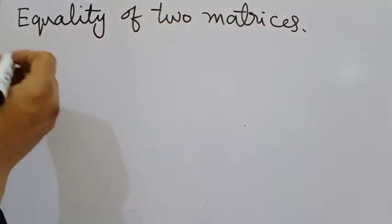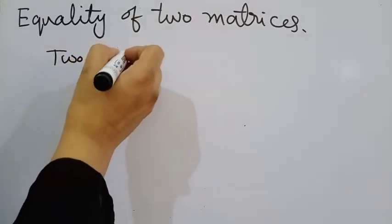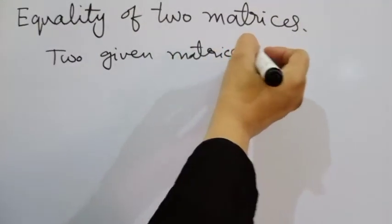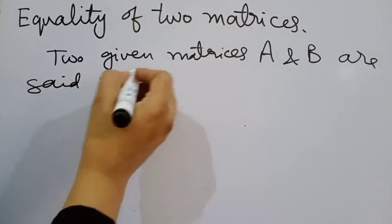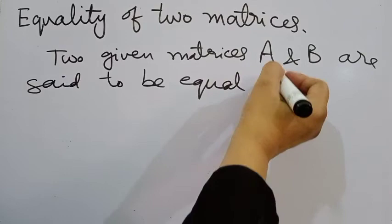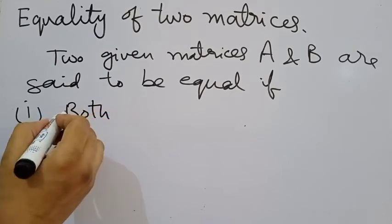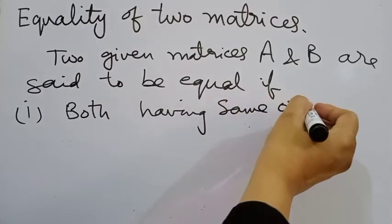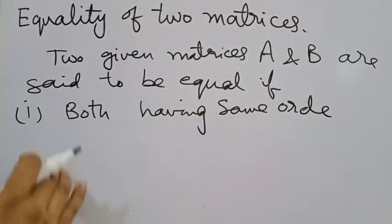Equality of two matrices. Two given matrices A and B are said to be equal if we have two conditions. First, both having same order. The same order means number of rows and number of columns are same.